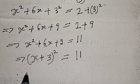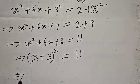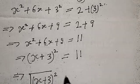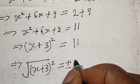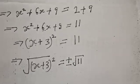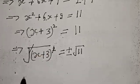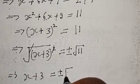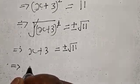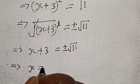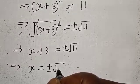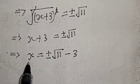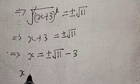What do we do next? We take the square root of both sides. This implies that we have the square root of x plus 3, all squared, is equal to plus or minus the square root of 11. This one will cancel this, implying that x plus 3 is equal to plus or minus the square root of 11. Therefore, we are looking for the value of x.